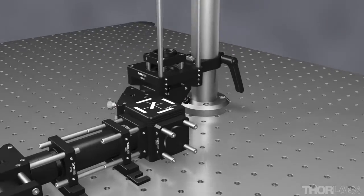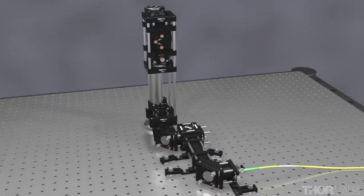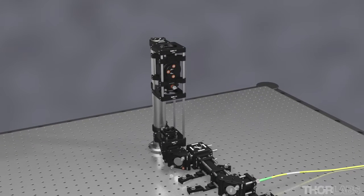Use the clamps that are included with the kit to secure the beam expander module to the optical table. When properly mounted, the beam expander module should not be pulled up off the table.